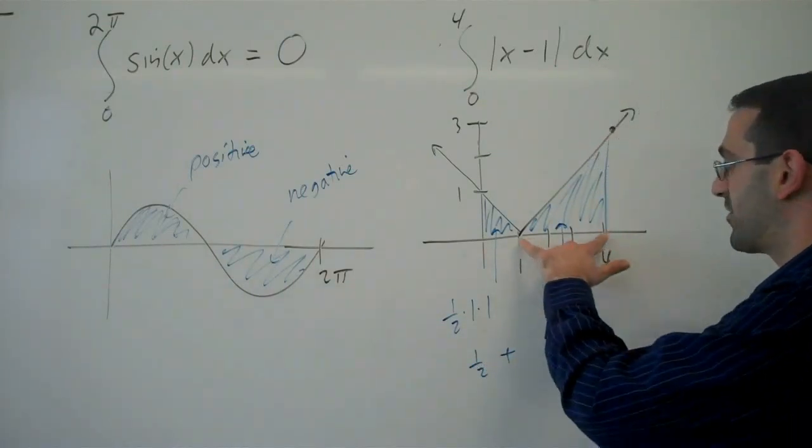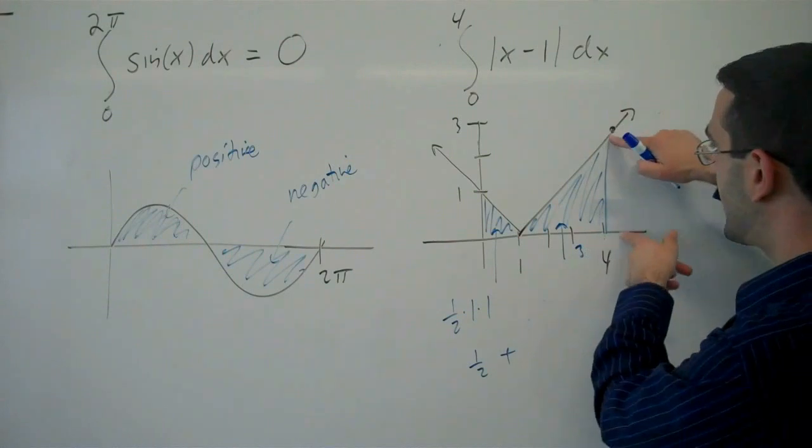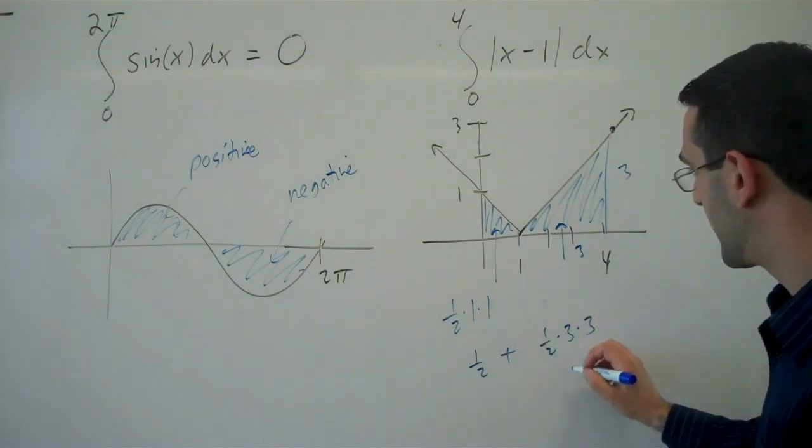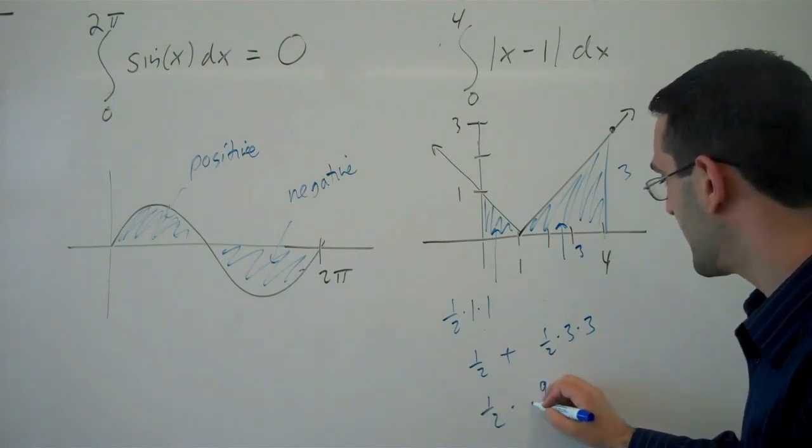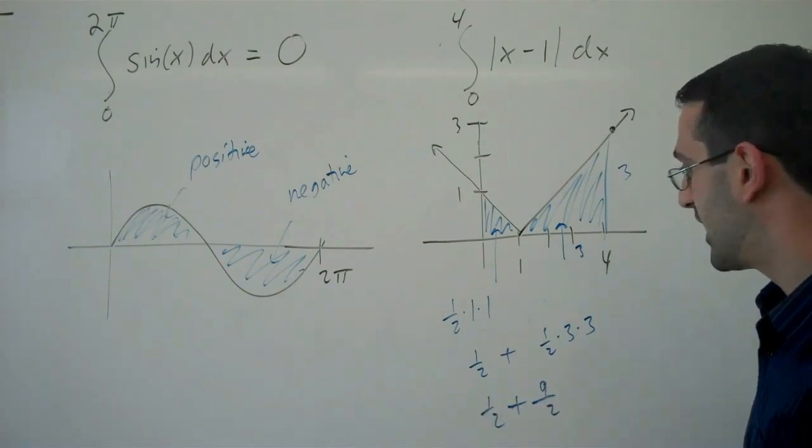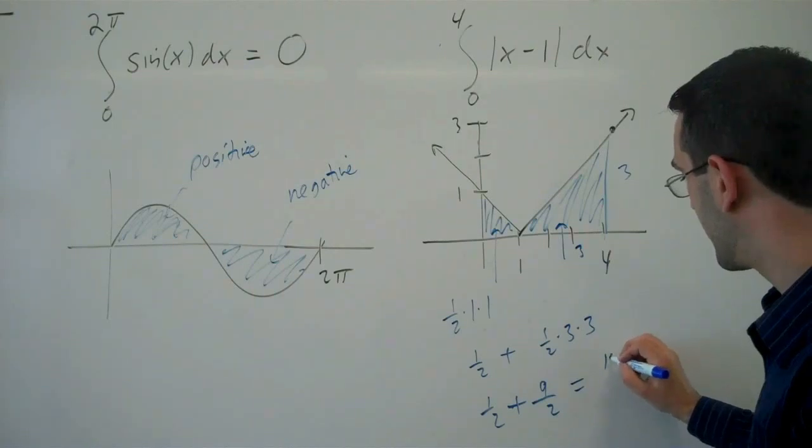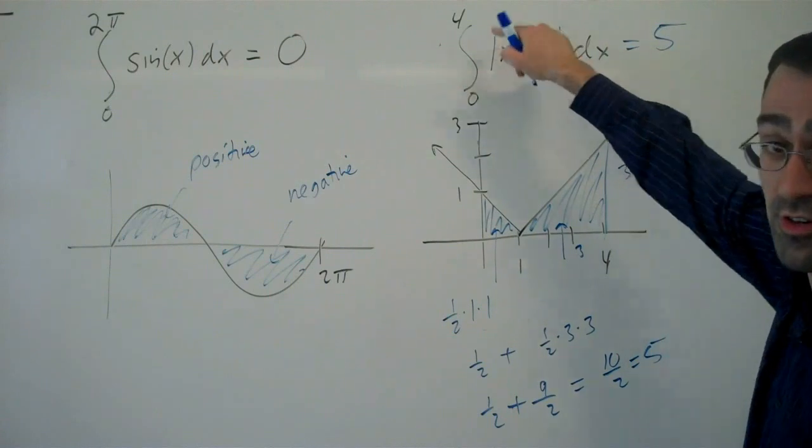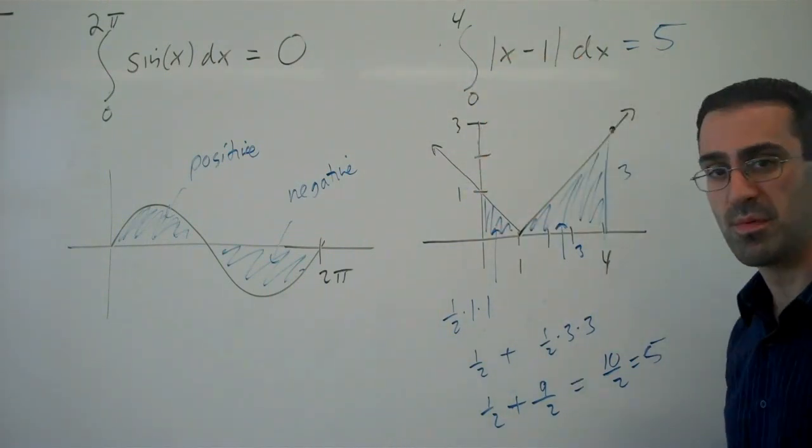Here, we have a width of 3 and a height of 3 as well. So the area of this triangular piece is 1 half by 3 by 3, or in other words, 9 halves, giving us a combined area of 10 halves or 5. So the area under this curve, this definite integral, will be 5.